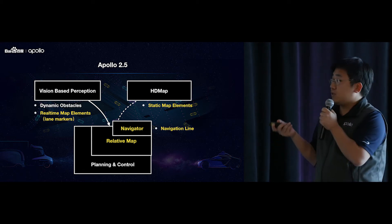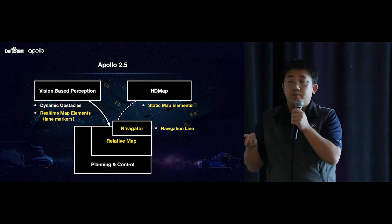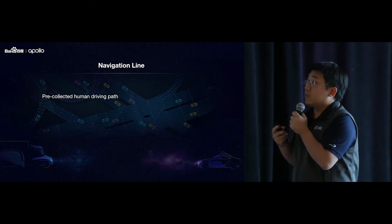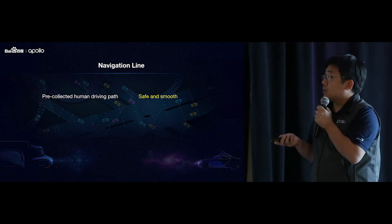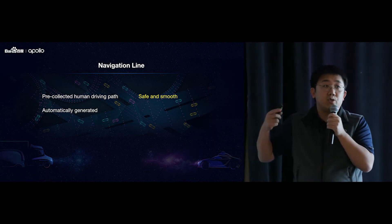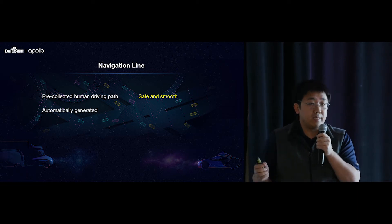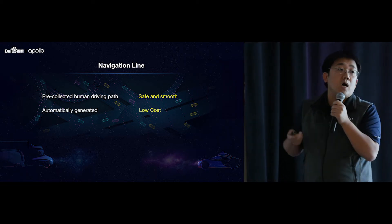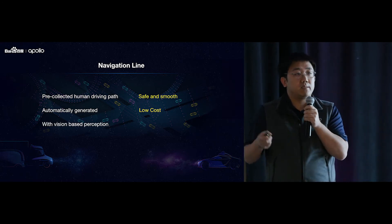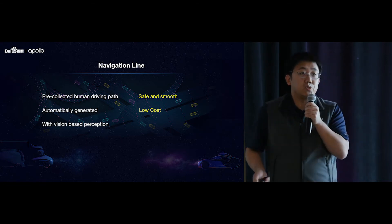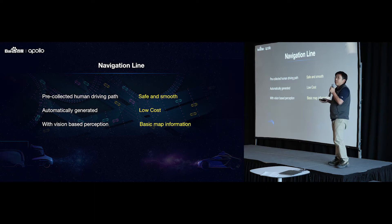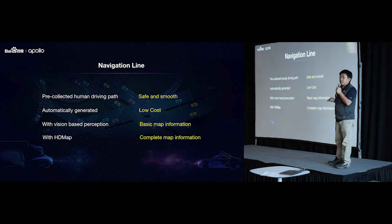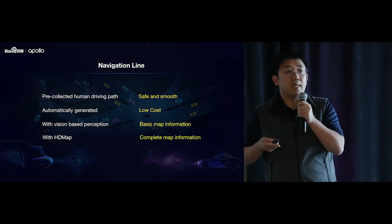We call these elements the navigation line. The navigation line is passed to the relative map as an input. The navigation line is pre-collected through human driving, so the data is safe and smooth. More importantly, after we collect this human driving data, the navigation line can be generated automatically without any manual labeling, so the cost is very low. Navigation line can work together with vision-based perception to generate basic mapping information sufficient for simple driving scenarios like freeways or rural areas. It can also be combined with HD map to handle more complicated scenarios like city roads.